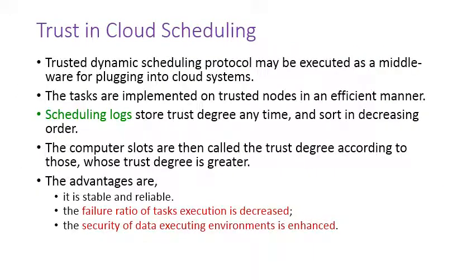The trusted dynamic scheduling protocol may be executed as a middleware for plugging into cloud systems. The tasks are implemented on trusted nodes in an efficient manner. The scheduling logs store the trust degree at any time and sort it in decreasing order. The compute slots are then called according to those whose trust degree is greater. Advantages: it is stable and reliable, the failure ratio of task execution is decreased, and the security of the data executing environment is enhanced.